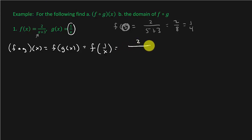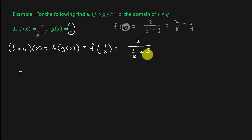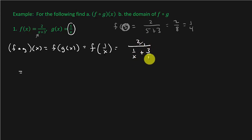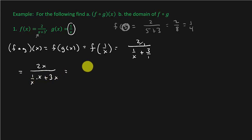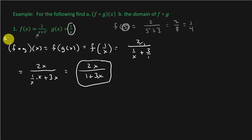This is going to be two over — in the place of x we're going to put one over x — so that's one over x plus three. If we simplify this, it's like simplifying a complex fraction. We're going to multiply each term by x, because the common denominator is x. So we get two times x over one over x times x plus three times x, which gives us two x over one plus three x. And so this is your answer to part a.